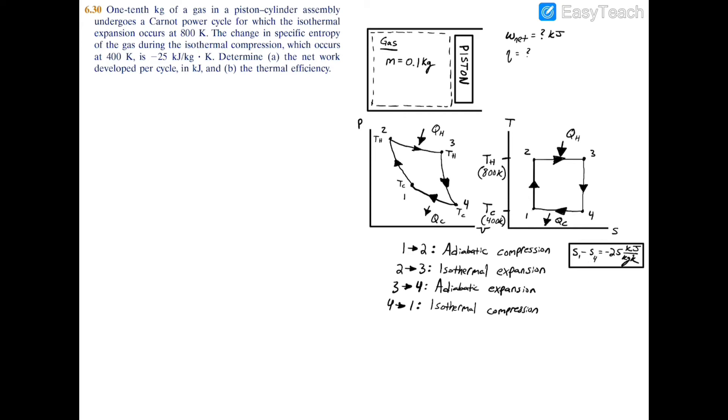To find the cycle work or network, we have W_net = Q_hot - Q_cold. In order to find these heat transfers, we'll start with Q_hot.